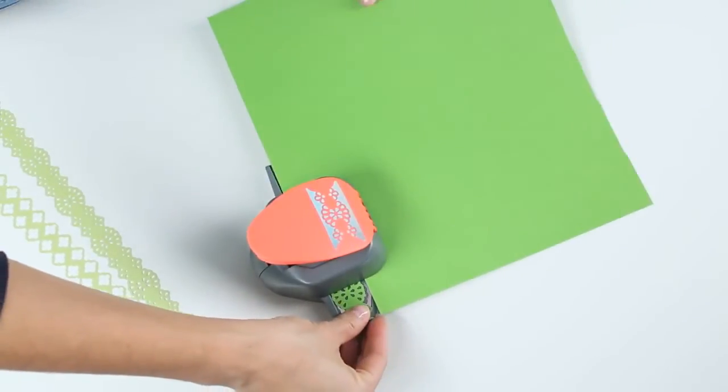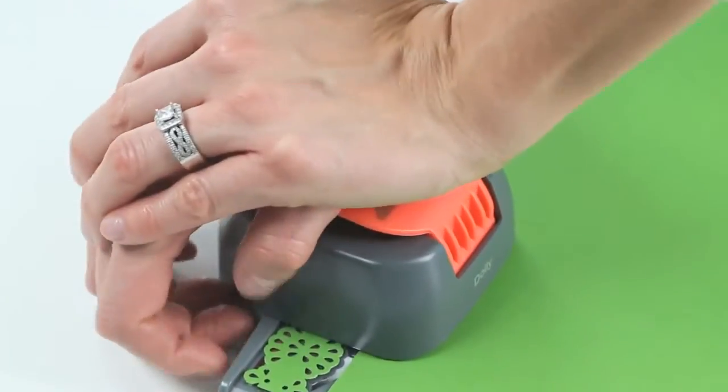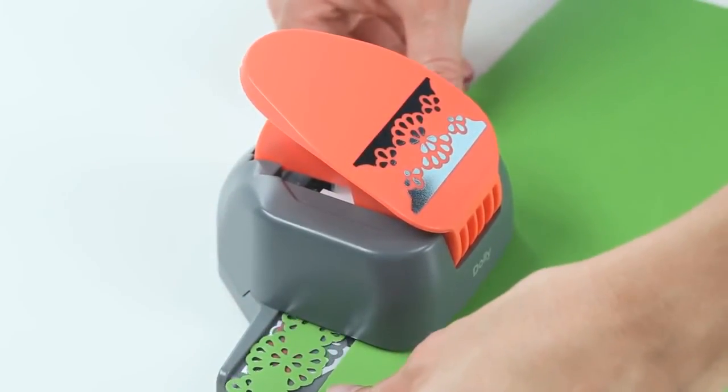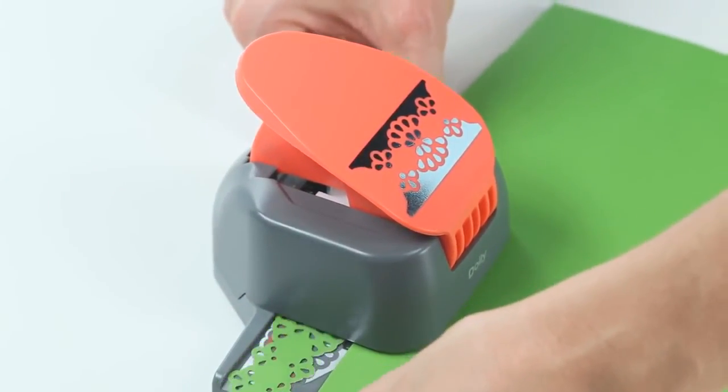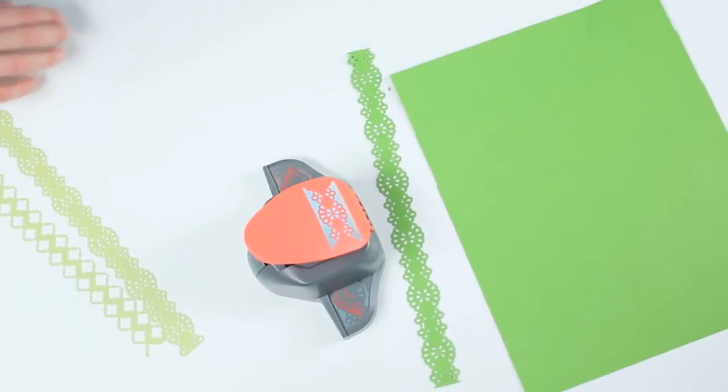Make sure when you punch that you punch all the way down. For the next punch, line up the silver design on the tool base with your paper and start punching. Continue this process of lining up the design and punching your paper until you finish the entire border strip.